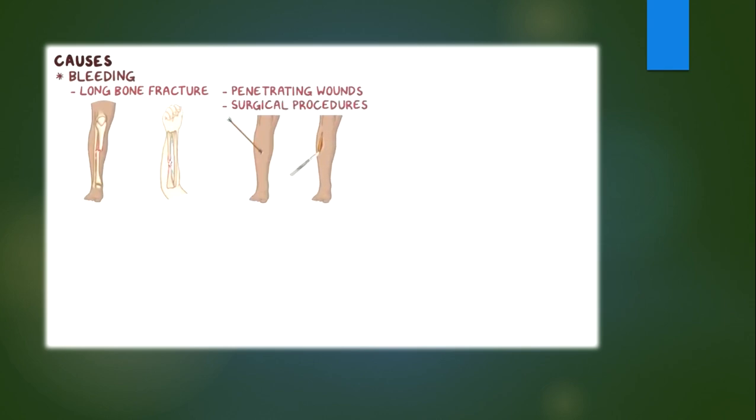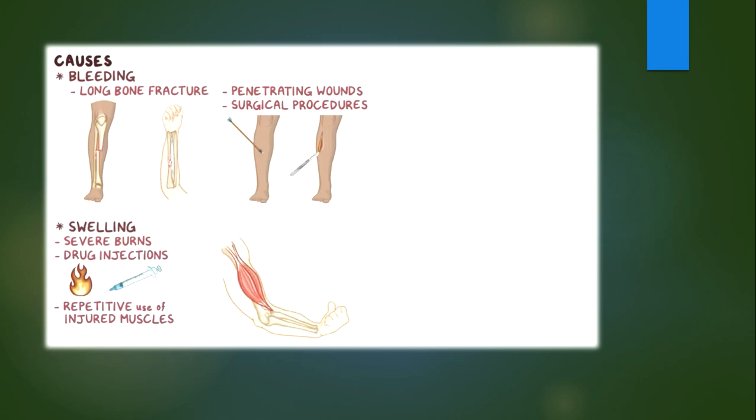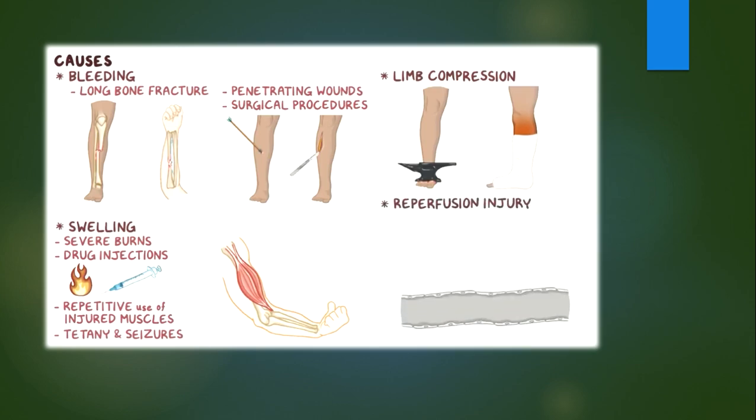The most common cause of compartment syndrome is bleeding inside the compartment. This typically occurs with long bone fractures like the tibia or the forearm bones and penetrating wounds or surgical procedures that injure blood vessels. Other causes are swelling of the tissue after severe burns, intravenous drug injection, repetitive use of the injured muscles, or a vigorous muscle contraction like in tetany or seizures. Any limb compression, like from a crush injury or from an inappropriately placed cast, can also lead to compartment syndrome. Another potential cause could be reperfusion injury. This occurs with the reestablishment of normal blood flow to hypoxic cells. These cells stop producing proteins like antioxidants, so providing them with oxygen again can actually lead to the formation of toxic reactive oxygen species that they can't get rid of.